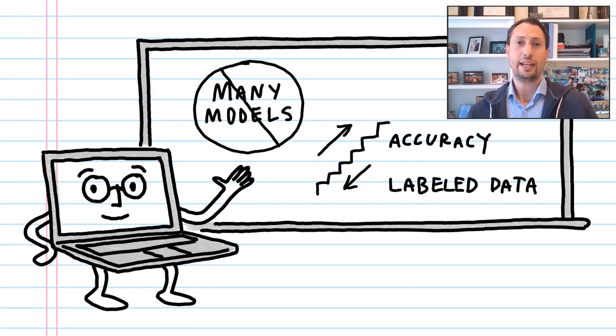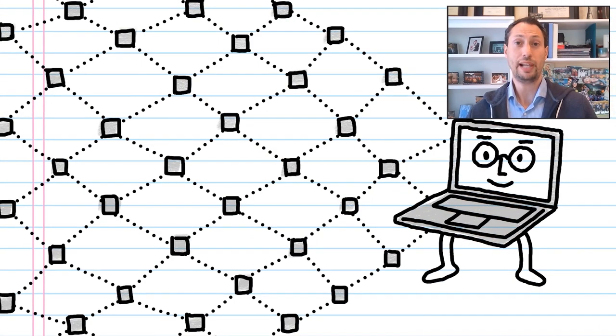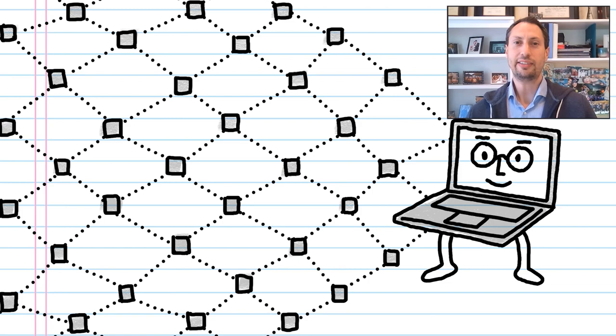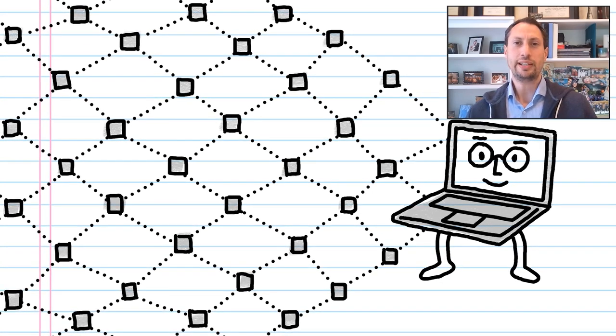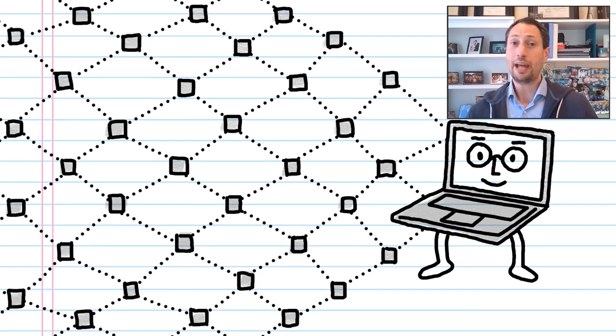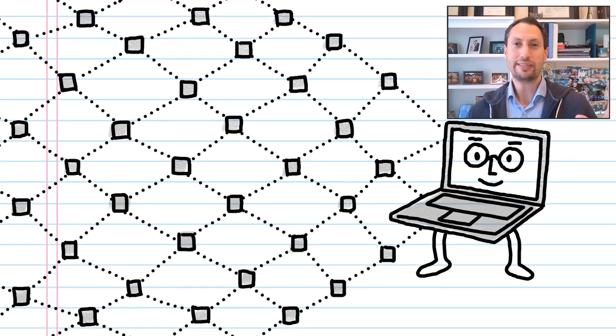Now, besides data, the size of a model determines its ability to learn and encode the complexity of language. The model's size is described by its number of parameters, roughly the number of connections in this neural network. The more parameters that a model has, the better it can capture the difficult nuances of language.